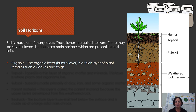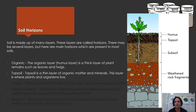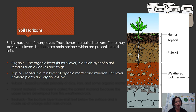The main horizons start with the organic layer on top, which we call humus — not the hummus you eat with your dips and carrots! This humus is made of leaves, twigs, and dead animals. Under that is the topsoil — as the name suggests, it's the soil that's on top. Funny how we name things!